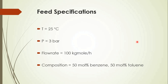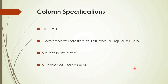We have chosen an example for today's simulation. The feed specifications are: temperature 25°C, pressure 3 bar, flow rate 100 kg·mol/hr, with composition of 50 mole percent benzene and 50 mole percent toluene. This benzene-toluene mixture needs to be separated using a stripper. Since the reboiler is present, the degree of freedom is 1, meaning we must specify one design spec — the column component fraction — such that the toluene mole fraction in the bottom product is 0.999 (99.9% pure toluene). We assume no pressure drop, and the number of stages is 20.